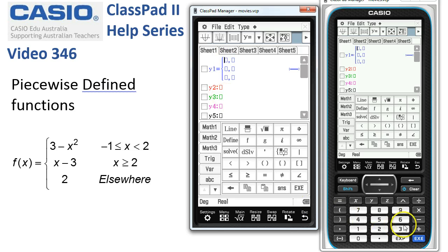In the top one is 3 minus x squared. And the next one is x minus 3, so x minus 3, and the last one is 2.